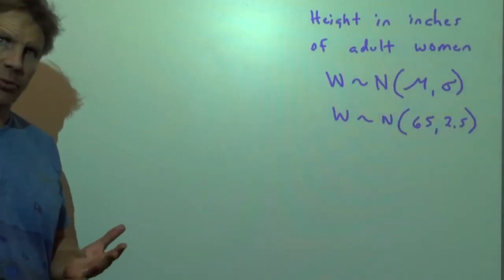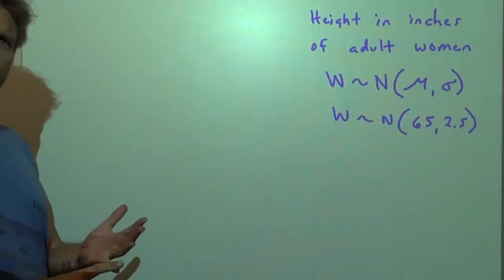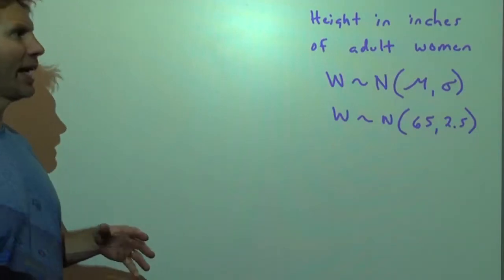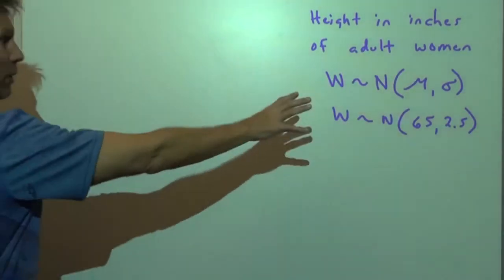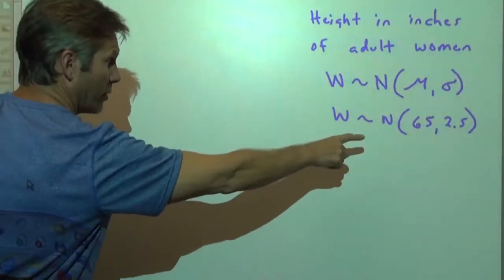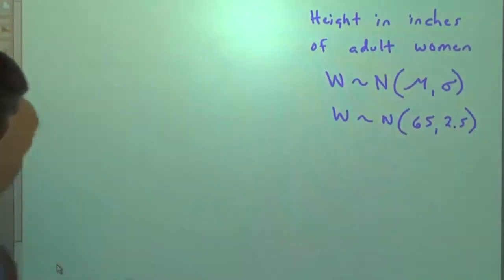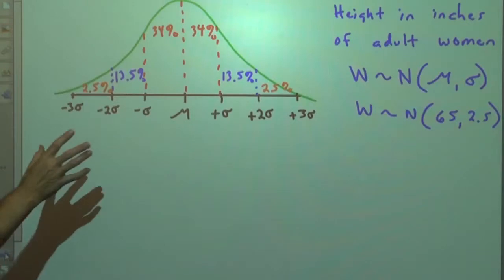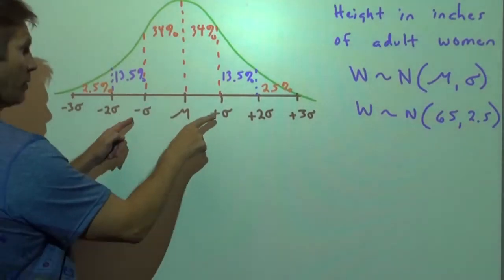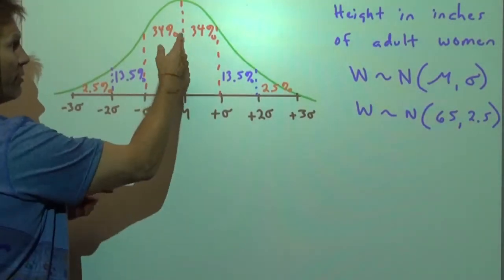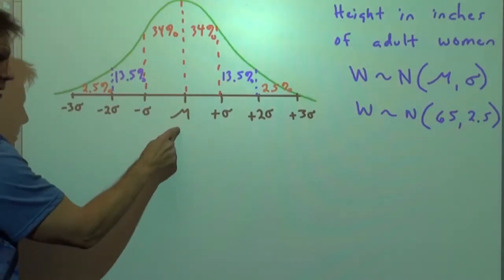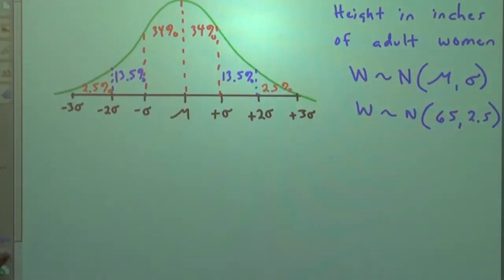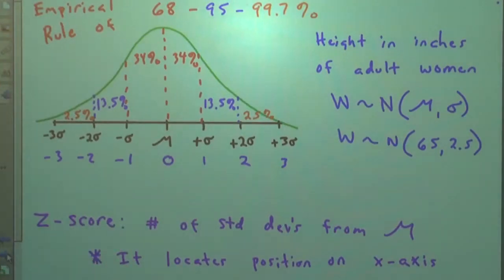In this video we're going to continue with normal distribution. We're going to look at how to calculate things on the calculator and then how to do an inverse normal problem where we're working backwards. Recall this situation: women's height is distributed normally with that mean and standard deviation. If you put the mean here and go one standard deviation in each direction, you trap 34% under the curve — so 65 inches, 67.5, etc. The z-score tells us how many standard deviations away from the mean we are.